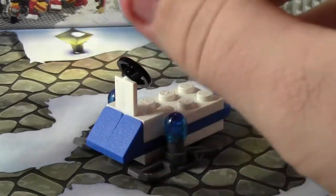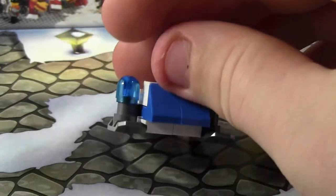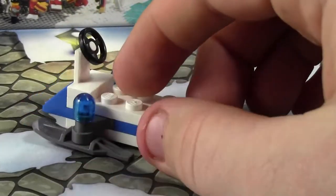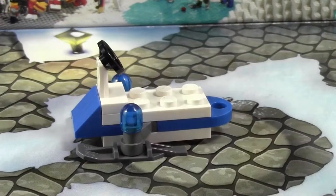And then these really awesome transparent blue lights on each side. We have some blue slopes here. And then here's where the minifigure sits and can steer.